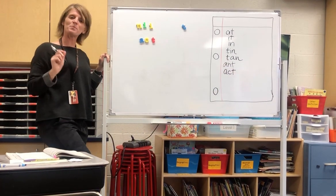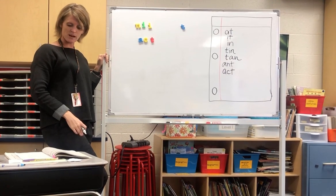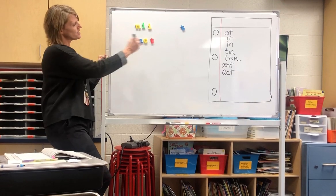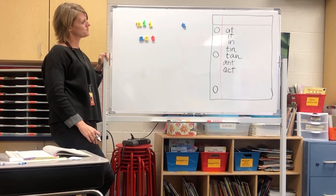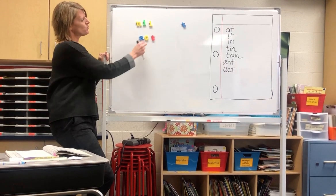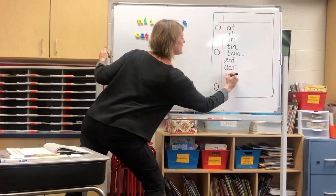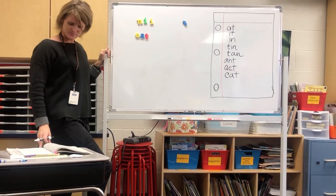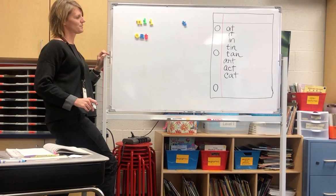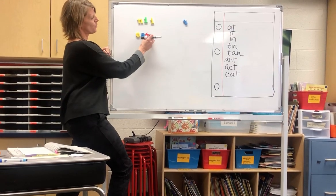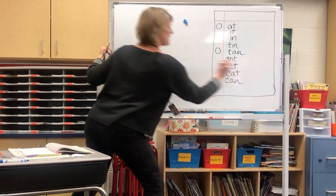Hopefully each time you can pause after I say the word so that you get to give it a try yourself, and then see what I did. Now move these three letters around to make a new word. Pause, make the new word, and then press play again. The new word should be — if I move these letters around — the word cat. Now change just one letter to make the word can. Hopefully you moved the T out of the way, replaced it with an N, and now we have the word can.